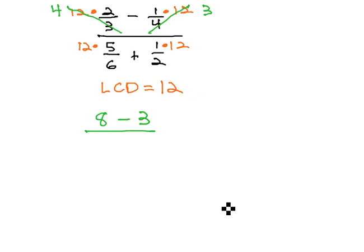12 over 6 reduces to 2. We now have 2 times 5, or 10, plus 12 over 2 reduces to 6. 1 times 6 is 6.